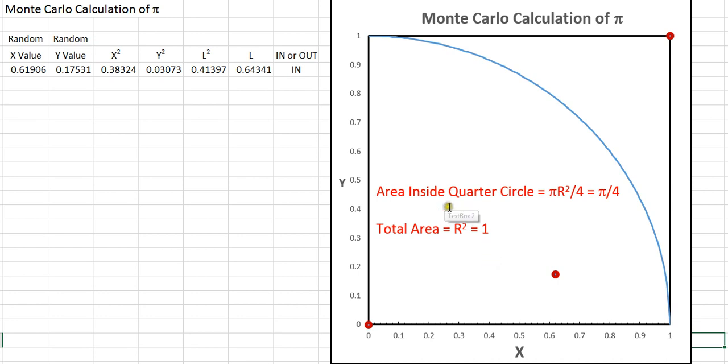So the ratio of the quarter circle to the total square would be pi over 4.